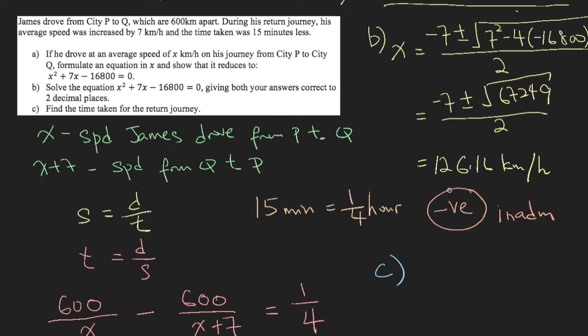The first part of the journey, James took 126 km per hour. The second part, his speed increases by 7 km per hour. So 126.16 plus 7 will give you 133.16 km per hour. So there you have it.